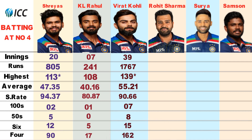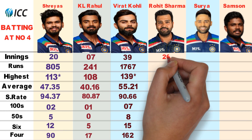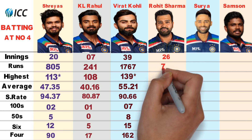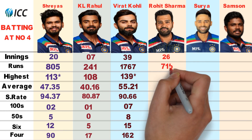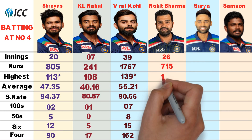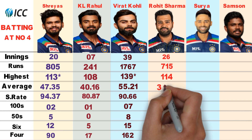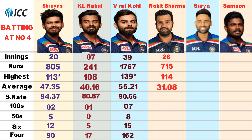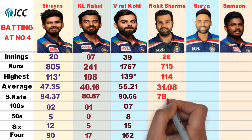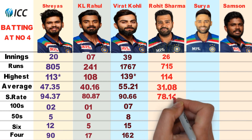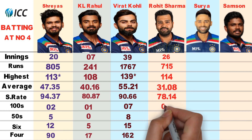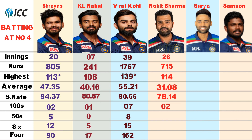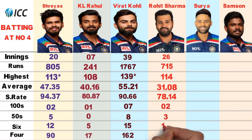Rohit Sharma played 27 innings, scoring 715 runs with a highest score of 114. Batting average 31.08, strike rate 78.14. He scored 2 centuries and 3 half centuries, with 10 sixes and 51 fours.